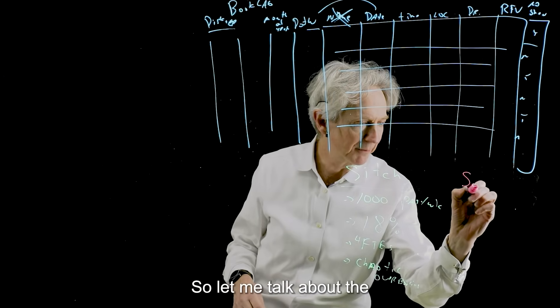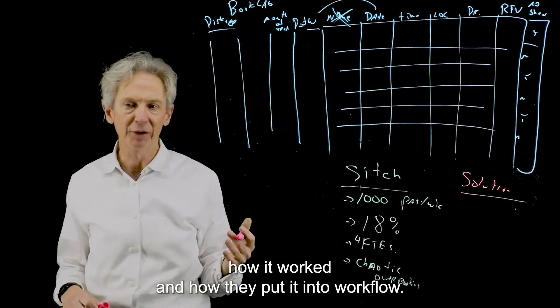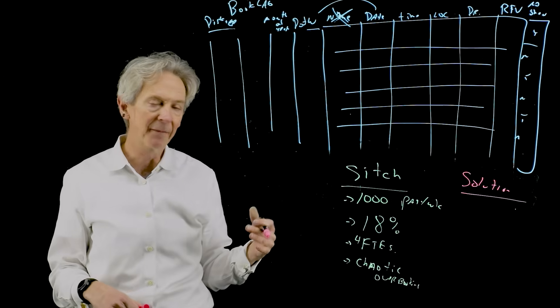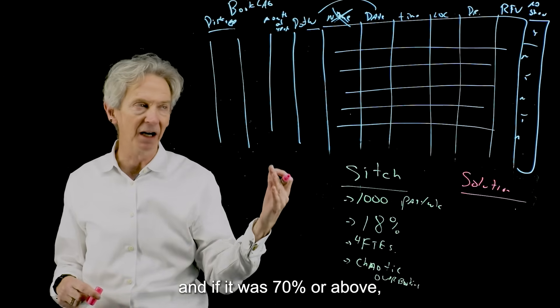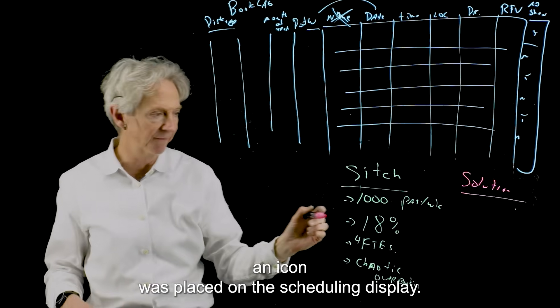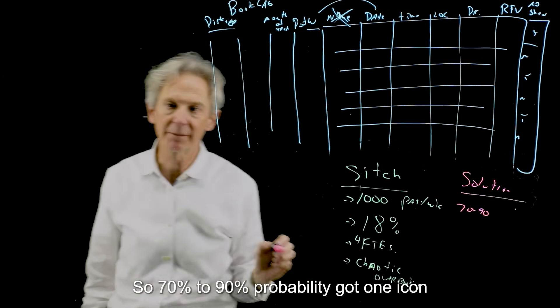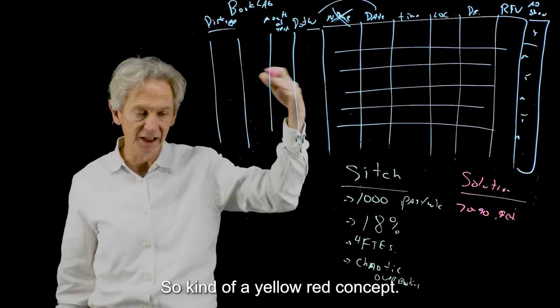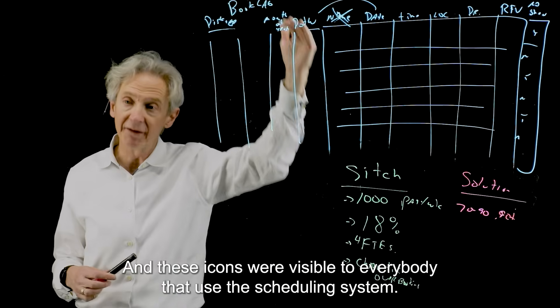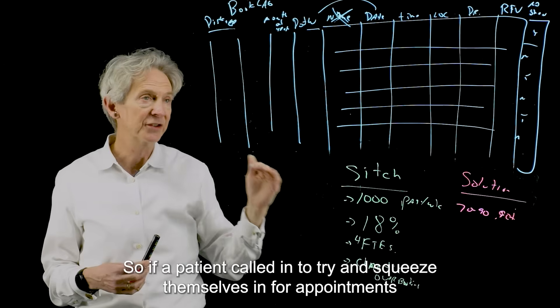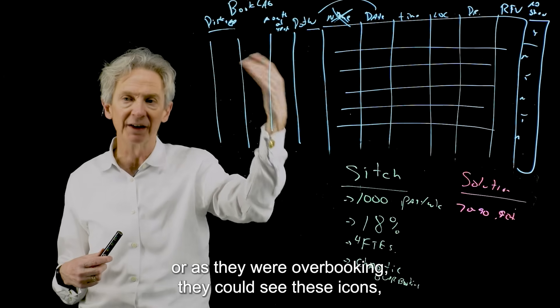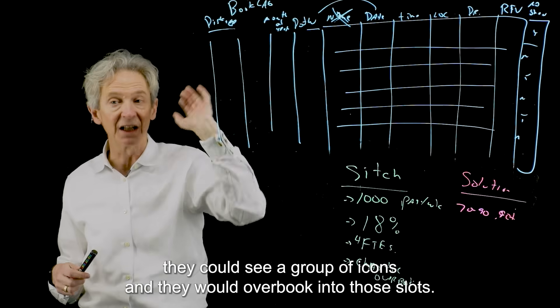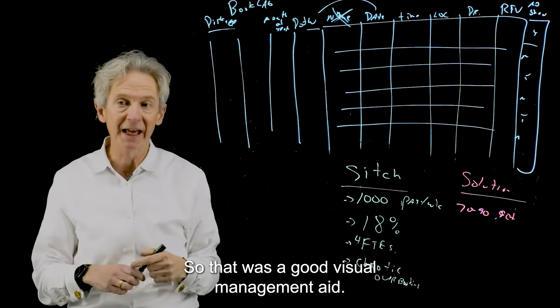So let me talk about how it worked and how they put it into workflow. So as an appointment was scheduled, a probability of no show was determined. And if it was 70% or above an icon was placed on the scheduling display. So 70 to 90% probability got one icon and then 90% or above got a different icon. So kind of a yellow red concept. And these icons were visible to everybody that used the scheduling system. So as patient called in to try and squeeze themselves in for appointments or as they were overbooking, they could see these icons, they could see a group of icons and they would overbook into those slots. So that was a good visual management aid.